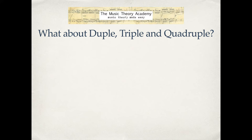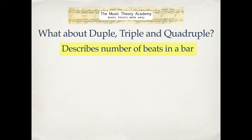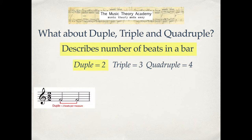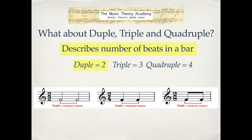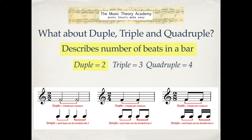What about duple, triple, and quadruple? These words describe the number of beats in a bar. If it's duple, it's two; if it's triple, it's three; and if it's quadruple, it's four. Here's an example of duple: two beats in every measure, in two-two. Here's another — two crotchet beats or two quarter note beats in every bar. And in two-eight you've got two quavers or two eighth notes. All are described as duple.